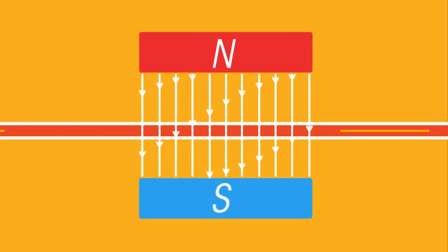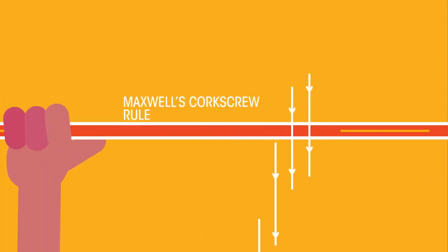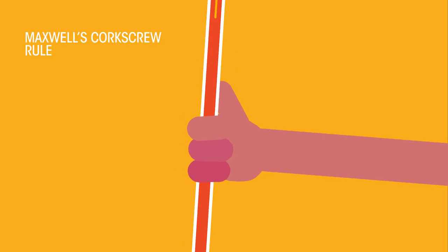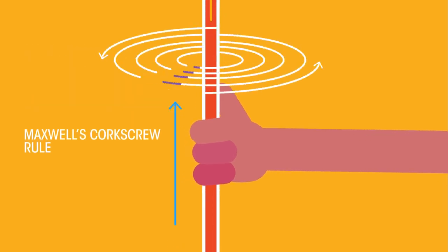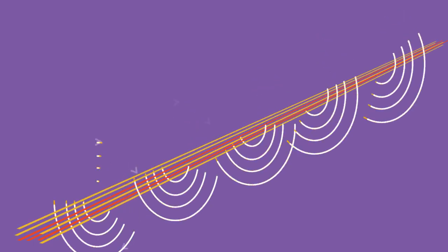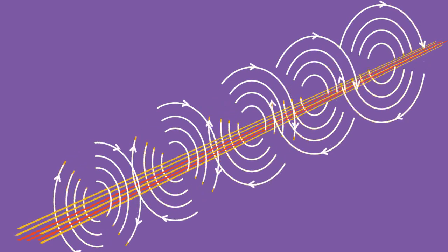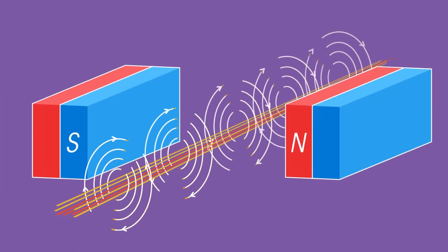The direction of the field can be shown by Maxwell's corkscrew rule. If we add more wires, the resultant magnetic field builds up and becomes stronger.